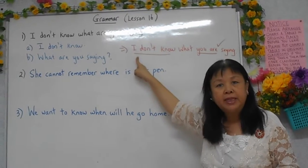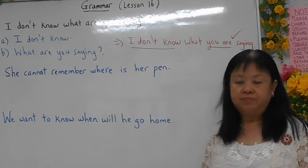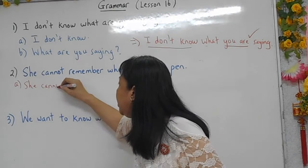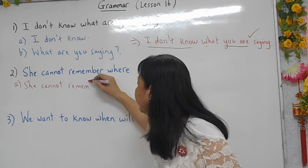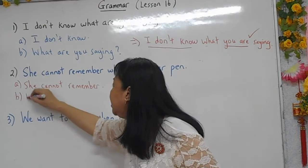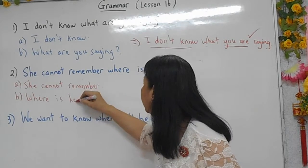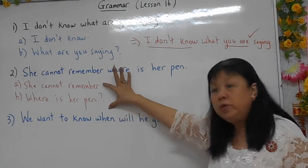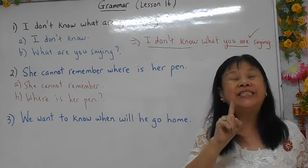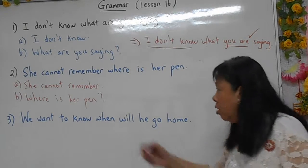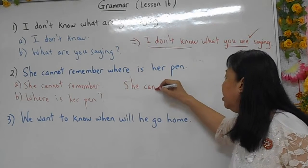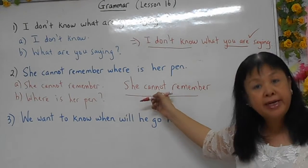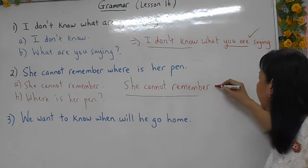The second sentence is the same. You break it into two sentences: 'She cannot remember' — and the second sentence is a question: 'Where is her bank?' But when you put these two into one statement or one sentence, it's different, because you are starting with a statement: 'She cannot remember.' The subject is a statement.